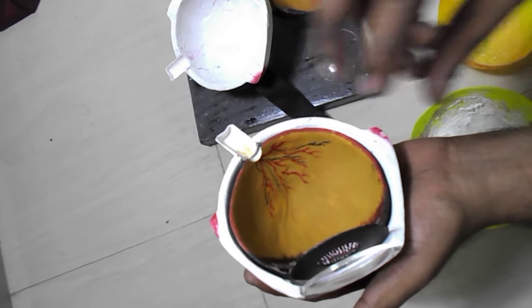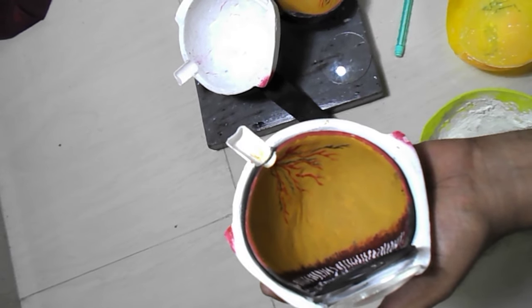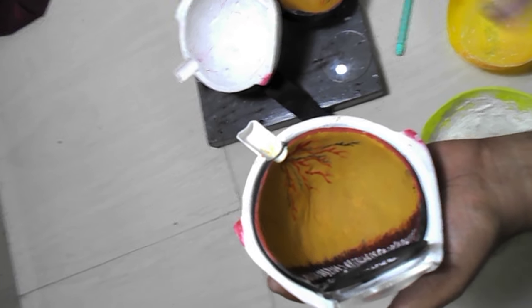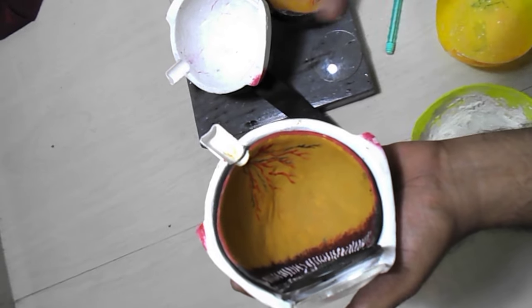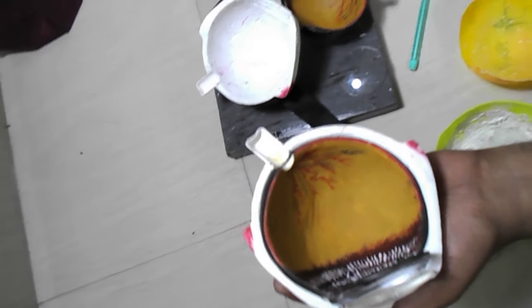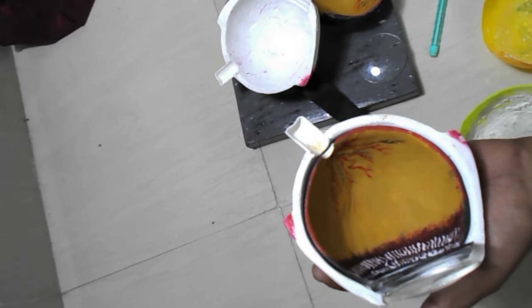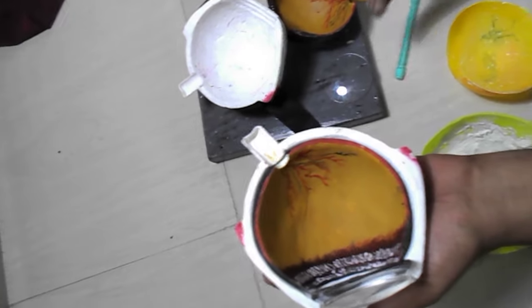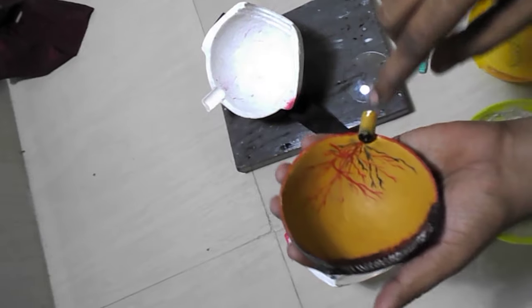Retina is made with rods and cones. Cones help us to understand colors and rods understand objects in darkness. When I want to see in dark light, rods help me to understand the object. This is how the retina works.